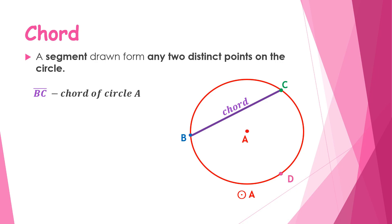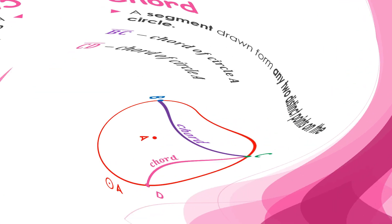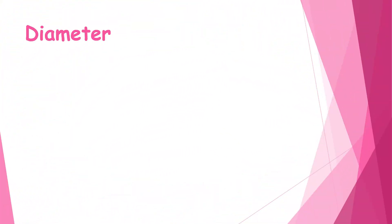For another example, let's say point D is also on Circle A. If we connect point C and point D, we form another chord. Therefore, segment CD is a chord of Circle A. Next, let's discuss diameter — a diameter is a chord that passes through the center.